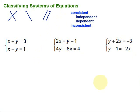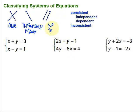We have some vocabulary to describe what's going on in our systems, starting with consistent and inconsistent. Let's go back to our three different situations and look at the number of solutions in each. If the lines intersect, there's one solution — that's where they cross. If the lines are on top of each other, we have infinitely many solutions, because the line extends forever in both directions and every point on that line works in both equations. And if lines are parallel, there is no solution.